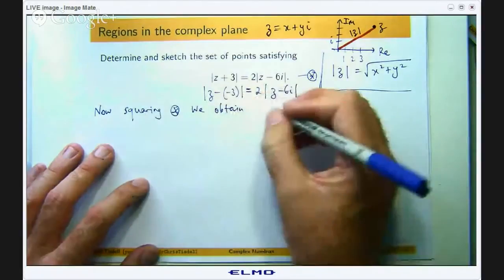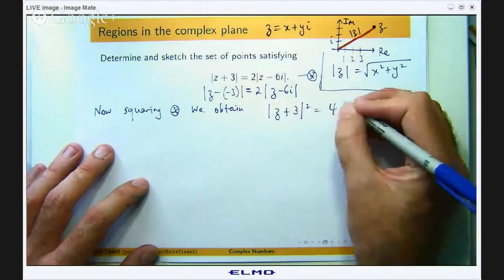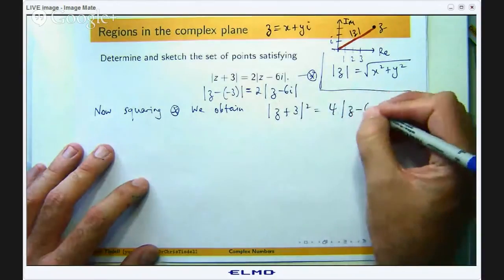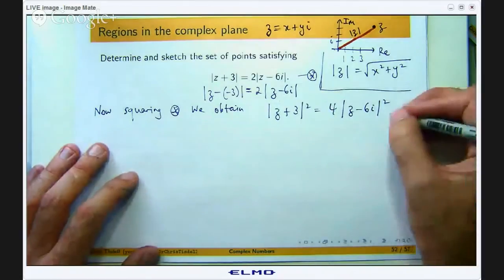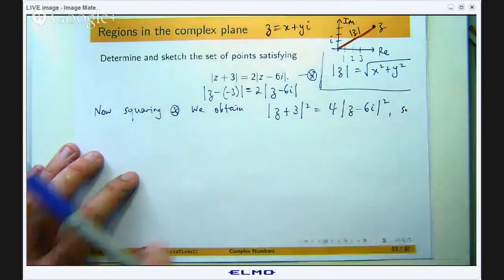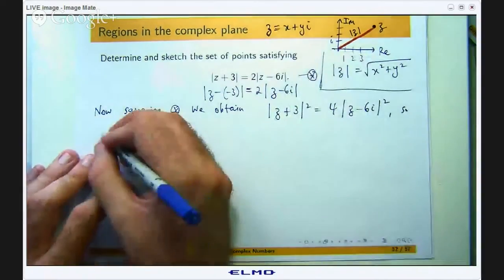So when I say that I mean I am squaring both sides. We obtain the following: we have got z plus 3 all squared equals 4 times z minus 6i all squared.